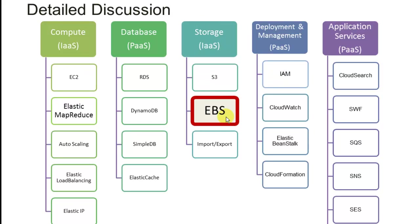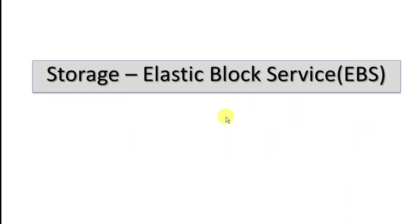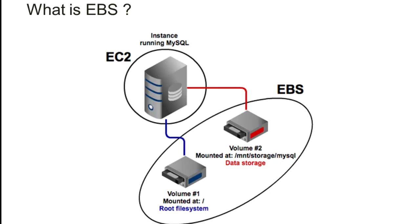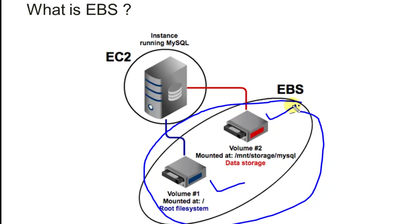EBS stands for Elastic Block Service. It is basically like an external hard drive for your EC2 servers running in the Amazon cloud. If you need to add more storage to your EC2 server, you can create additional EBS volumes and attach them to your EC2 server, either when you create a fresh new server or later.